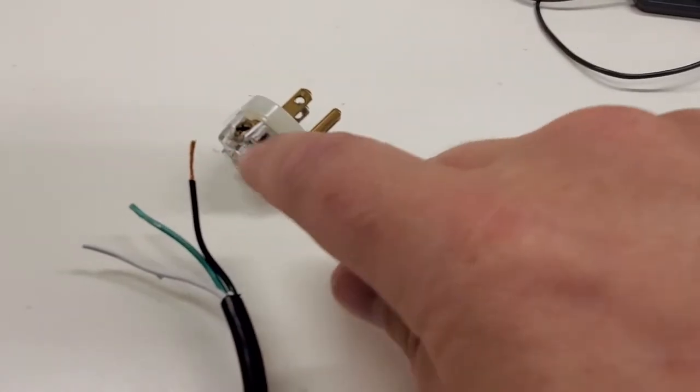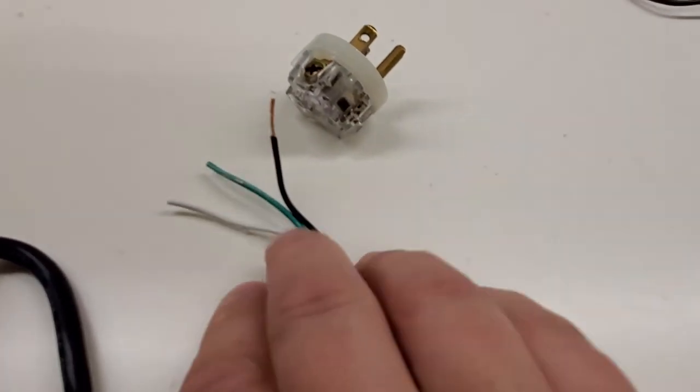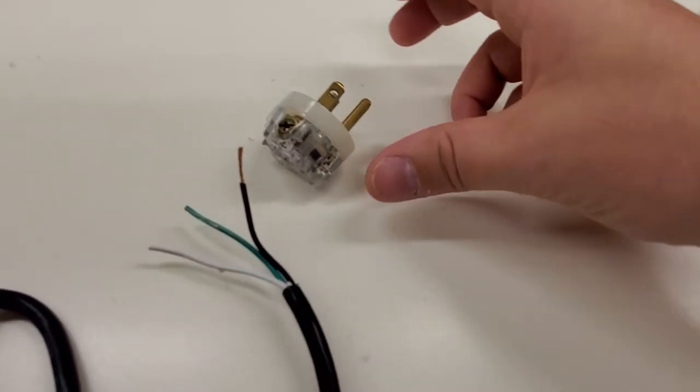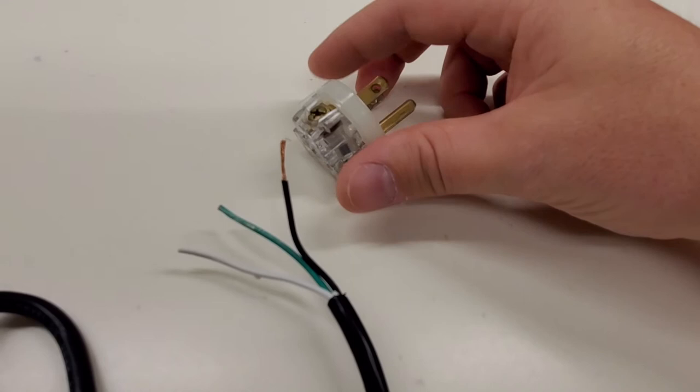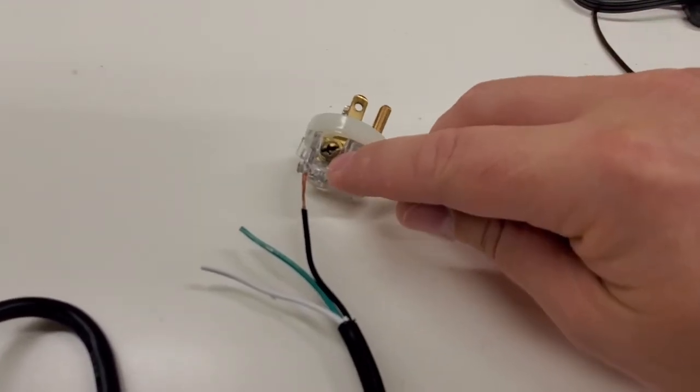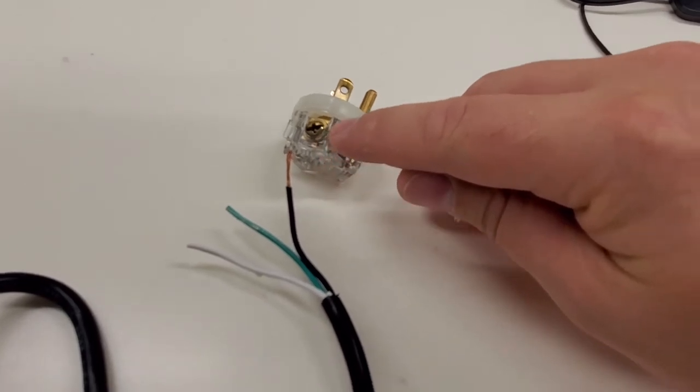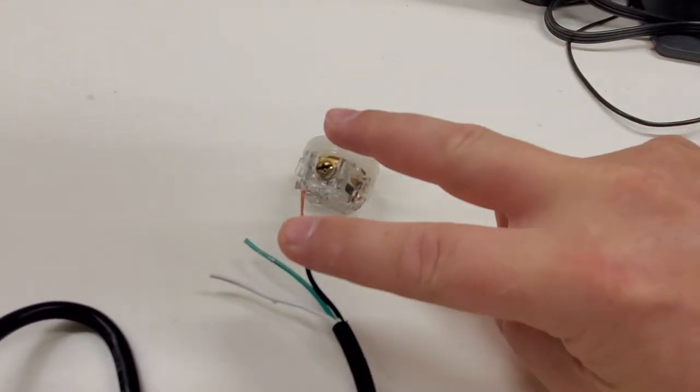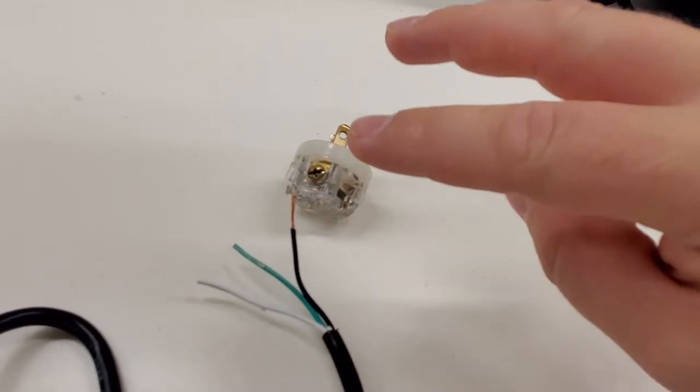And the reason that thermal expansion matters is because not only does your hot wire get warm under load because of amps that are going through it and the natural resistance of the wire, but also this terminal right here is going to get warm. And you want those both to expand and contract at about the same rate, pretty close to it.